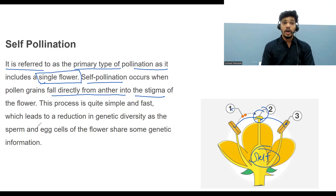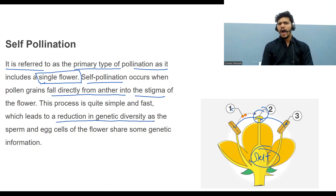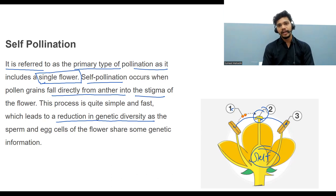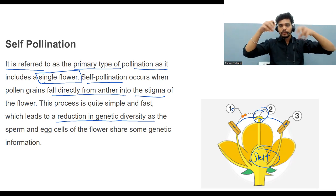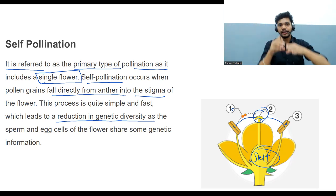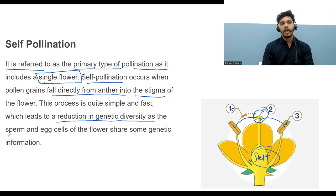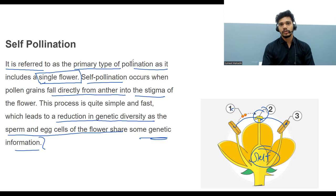This process is quite simple and fast, but it leads to a reduction in genetic diversity. There are no variations because the same flower's anthers are transferring pollen grains. The sperm and egg cell of the flower share some of the same genetic information.